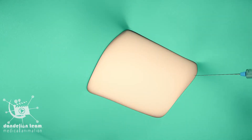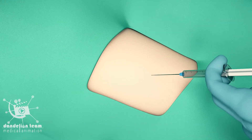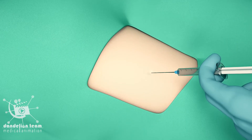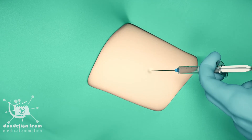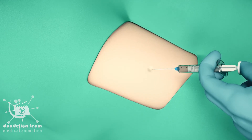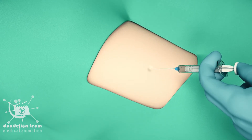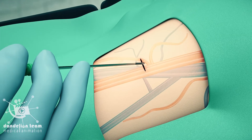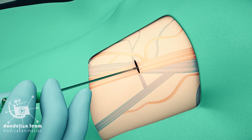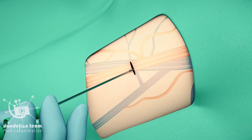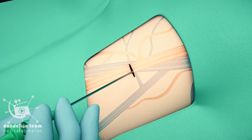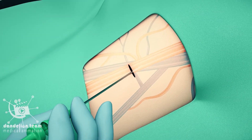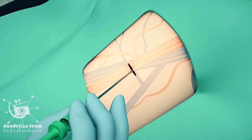First, the doctor will numb the skin, which means you'll be awake during the procedure. A needle will be placed through the skin into one of your arteries through an incision through your groin, wrist, or arm.